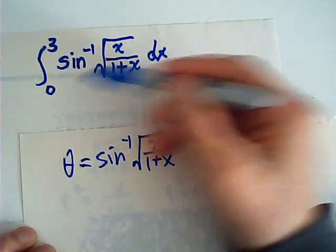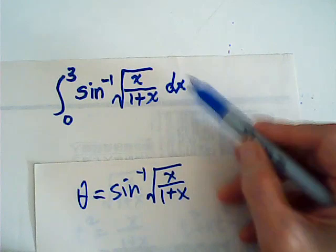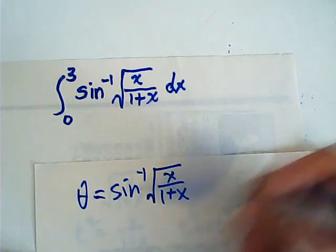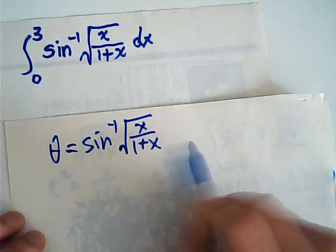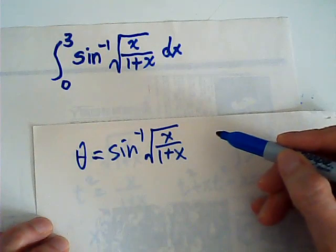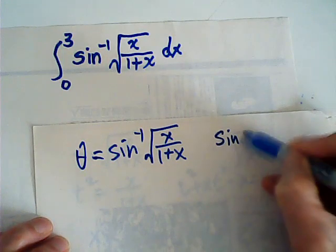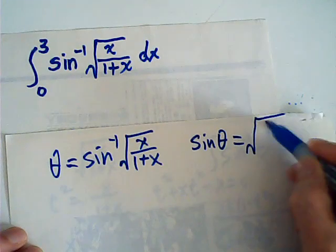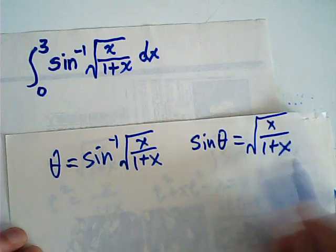Now, this becomes theta. The problem is that you have to replace dx in terms of d theta. If the result is nice, then it's good. Then from here, we want to find dx. This means that sine theta is equal to square root of x over 1 plus x. How do we find dx?